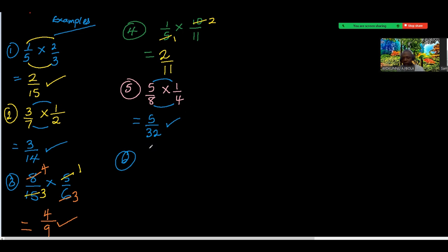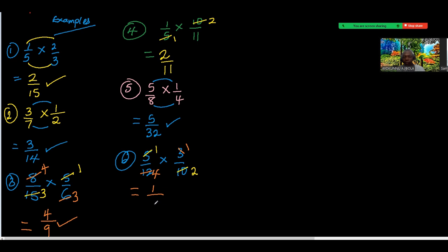Number six: 5 over 12 times 3 over 10. Is there any number that can divide something above and below? 5 and 10: 5 into 5 is 1, 5 into 10 is 2. Also 12 and 3: 3 into 3 is 1, 3 into 12 is 4. So at the top: 1 over 1. At the bottom: 4 times 2 is 8. Answer is 1 over 8.